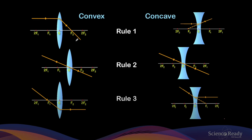Let's look at the three rules diagrammatically. The first rule: a light ray that's parallel to the principal axis after refraction will pass through the focus of the lens. And for the concave lens, we have a light ray that's parallel to the principal axis. And after refraction, it will refract in such a way so that when we draw a dashed line, it will pass through the focus in front of the concave lens.